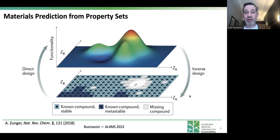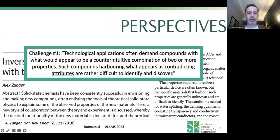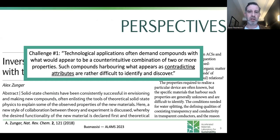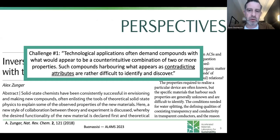It's challenging for three reasons. Challenge number one is that technological applications of interest often contain conflicting or contradicting attributes. A thermoelectric material with a high ZT mandates a large electrical conductivity and a small thermal conductivity — and usually in materials these two properties scale together. You have to break that coincidence using phonon band engineering, for example. It becomes challenging to embed that kind of information in an algorithm, especially when the physics is rare.